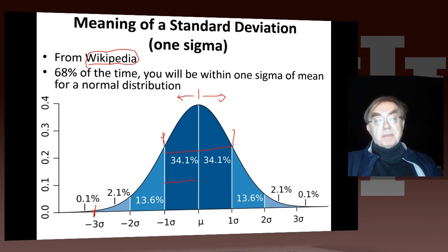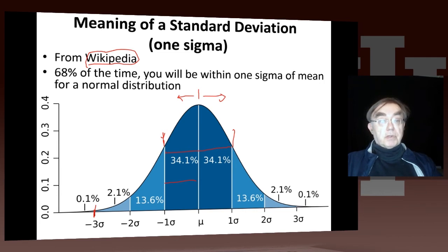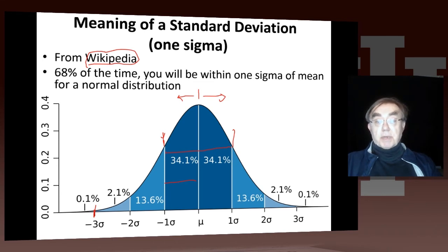There is a subtlety: if you look at a huge number of plots, like 1,000 plots, something which happens 0.1% of the time will actually occur on two plots. So you have to be a little careful. Three sigma seen twice in an analysis where you make 1,000 separate histograms is not significant. You need to fold in that fact.